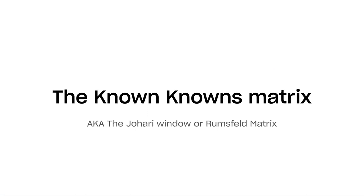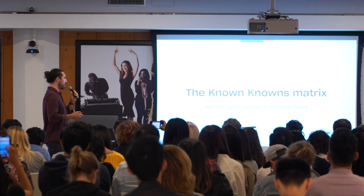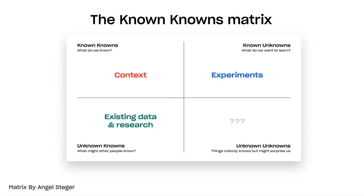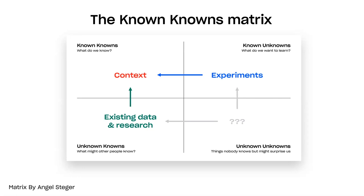Enter the known knowns matrix, also known as the Johari window or the Rumsfeld matrix. At Dropbox, our director of growth design Angel Steger recommends using it at the beginning of a project when you're in an area of strong ambiguity. You might find yourself in the bottom two quadrants — either sitting on unknown knowns like past research or experiment results, or starting completely from scratch. The recommendation is to move up and to the left into the context quadrant by gathering knowledge: talking to neighboring teams, learning about past experimentation and research, or running some initial experiments.